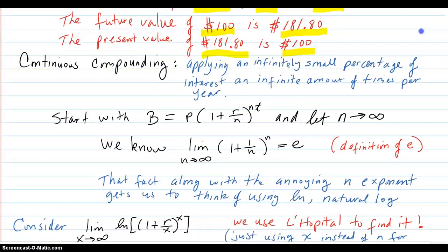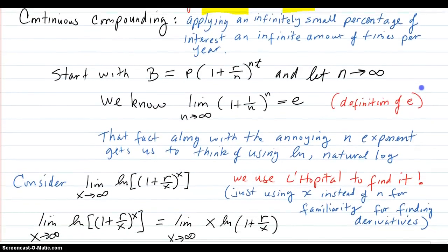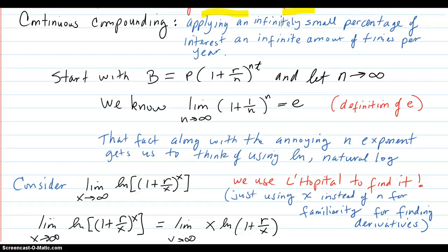Now let's talk about continuous compounding. What that is, is applying an infinitely small percentage of interest because you have N going to infinity here.